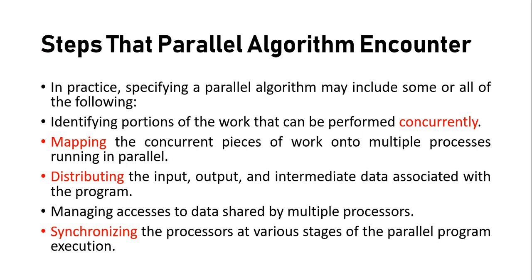The steps that a parallel algorithm encounters in practice — specifying a parallel algorithm may include some or all of the following steps, depending on the system you are using, how many processes are involved, and whether you are using a pipeline fashion. First, identifying the portions of work that can be performed concurrently — tasks which can be executed in sequence or at the same time. Then, mapping those tasks to multiple processes running in parallel.